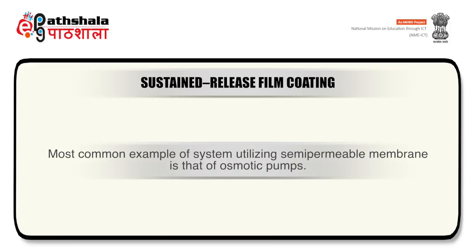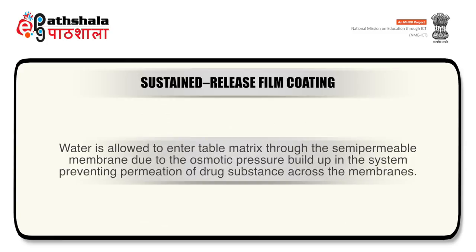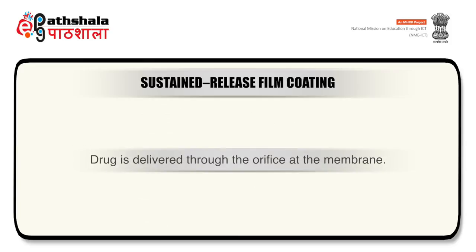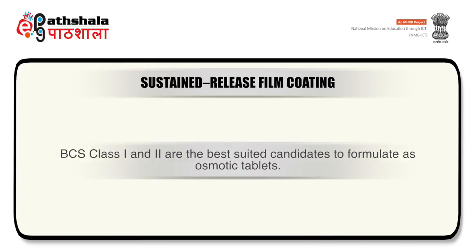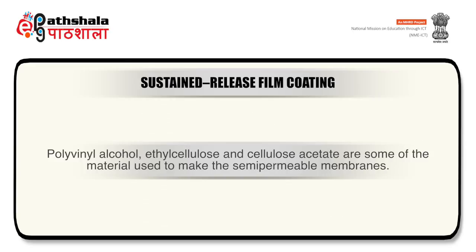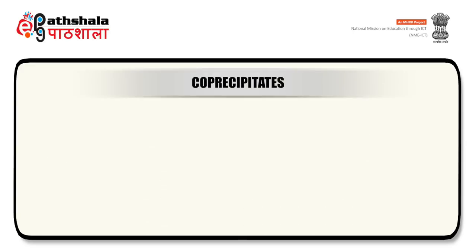The most common example of a system utilizing a semi-permeable membrane is that of osmotic pumps. Water is allowed to enter the tablet matrix through the semi-permeable membrane due to osmotic pressure build-up in the system, preventing permeation of drug substance across the membrane. Drug is delivered through an orifice in the membrane. BCS Class 1 and Class 2 drugs are the best suited candidates to formulate as osmotic tablets. Polyvinyl alcohol, ethyl cellulose, and cellulose acetate are examples of materials used to make semi-permeable membranes.